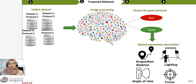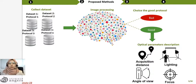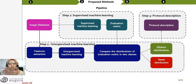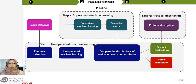We take the images with good results and try to extract some optical parameter descriptions from these images, such as acquisition distance, lighting, and angular view. To do this description, we propose a pipeline based on three steps: the first step is the supervised machine learning part, the second is unsupervised machine learning, and the last one is the protocol description. We will see these three steps in more detail with a real test, but first we look at the database used.